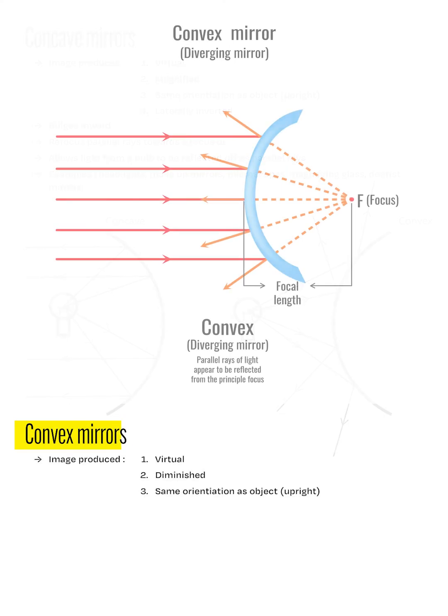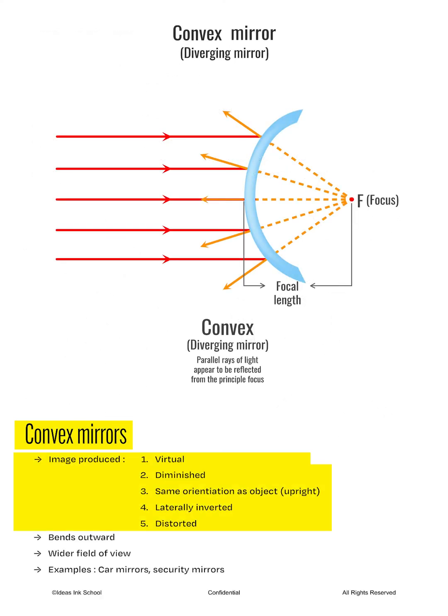Convex mirrors on the other hand bend outwards. This type of mirror produces images which are virtual, diminished, upright, laterally inverted and distorted. The reason is because convex mirrors cause light from a source to scatter in different directions as the incident rays hit the curved surface at different angles of incidence. Convex mirrors are used as car mirrors or security mirrors in our local convenience stores as they can give us a wider field of view.